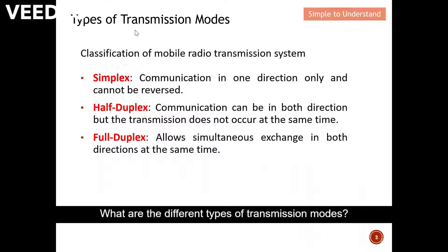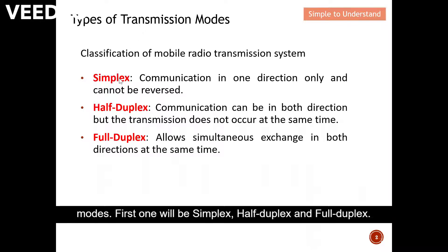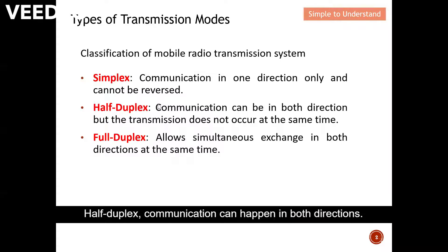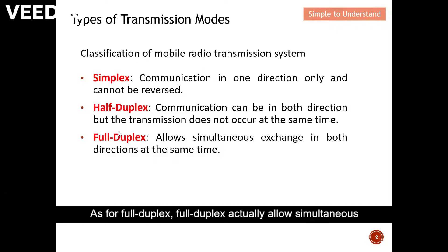So what are the different types of transmission mode? There are three types. The first one is simplex, the second is half duplex, and the third is full duplex. For simplex, communication can happen in only one direction and cannot be reversed. Half duplex communication can happen in both directions; however, transmission must not occur at the same time. For full duplex, simultaneous exchange of data in both directions is allowed.